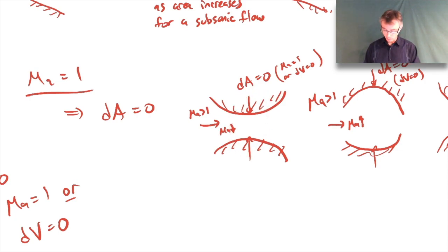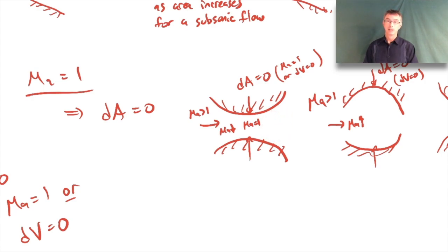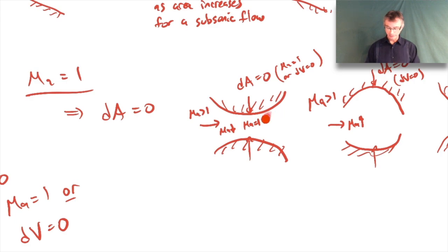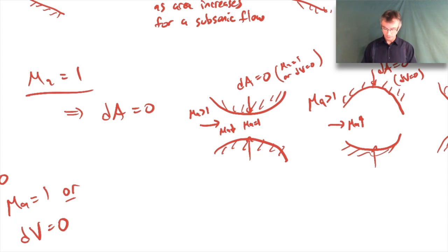What ends up happening further downstream after the throat - if we do reach M = 1 there - gets a lot more complicated. That depends on the downstream boundary conditions, namely the pressure. It could go subsonic or supersonic downstream depending on the back pressure. We'll talk about that in a future lecture.